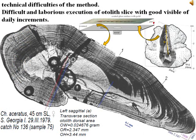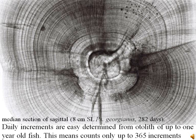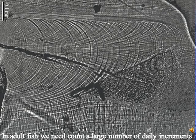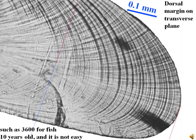Technical difficulties of the method: Difficult and laborious execution of otolith slices with good visibility of daily increments. Daily increments are easily determined from otoliths of up to one-year-old fish, meaning counts of only up to 365 increments. In adult fish, we need to count a large number of daily increments, such as 3,600 for fish 10 years old. And it is not easy.